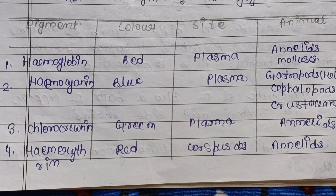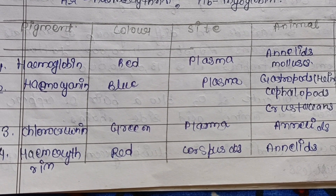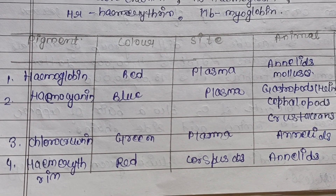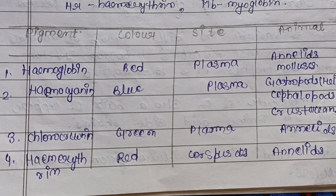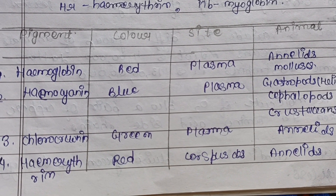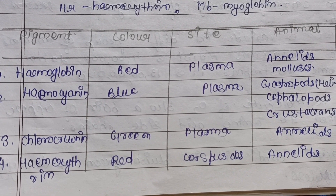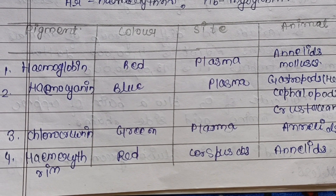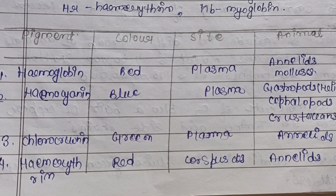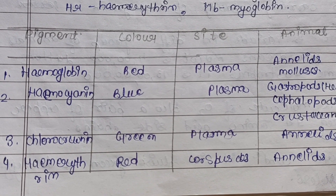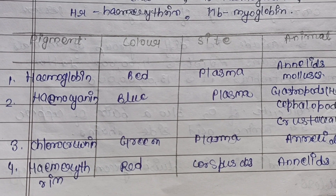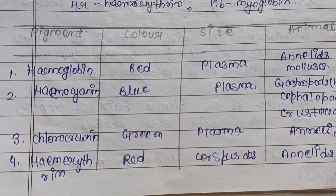A summary table shows: hemoglobin is red when oxygenated, found in plasma, present in annelids and mollusks; hemocyanin is blue, found in plasma, present in gastropods, cephalopods, and crustaceans; chlorochronin is green, found in plasma, present in annelids; hemoerythrin is red, found in blood corpuscles, present in annelids. In later videos, hemocyanin, chlorochronin, and hemoerythrin will be discussed in detail. Stay tuned for the next video.